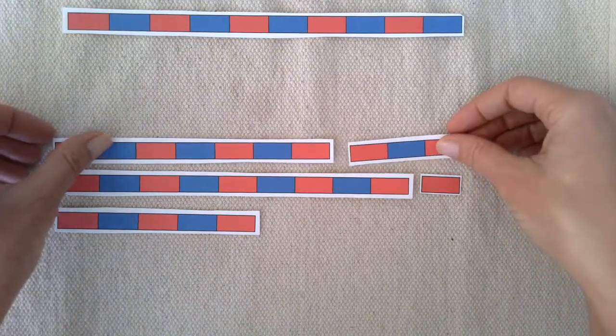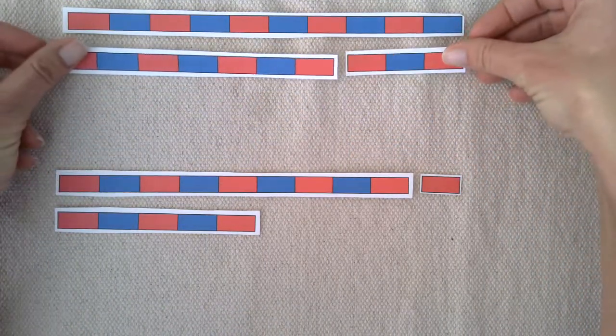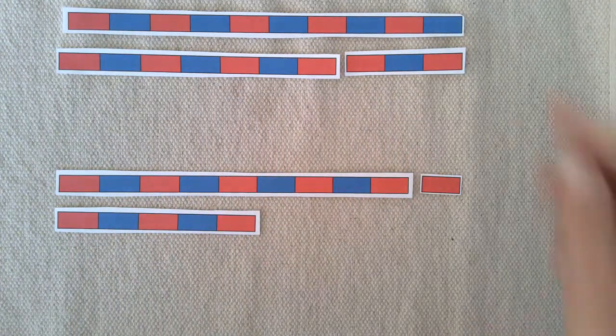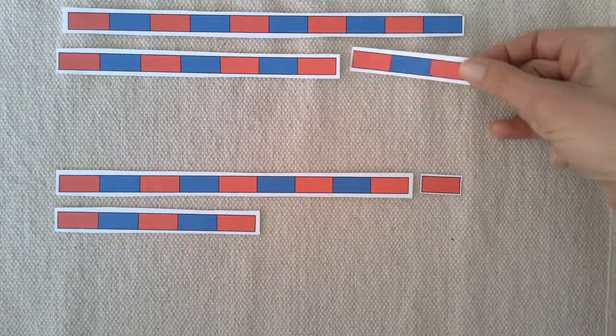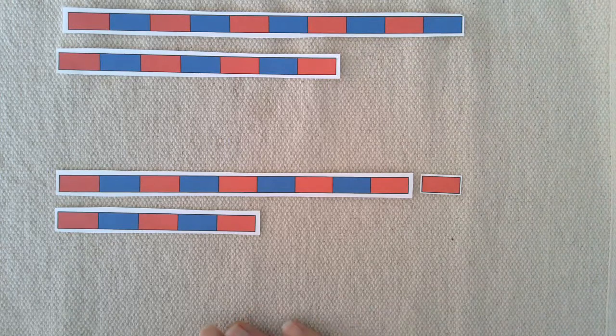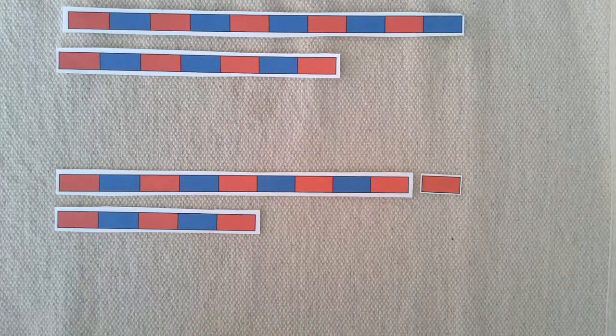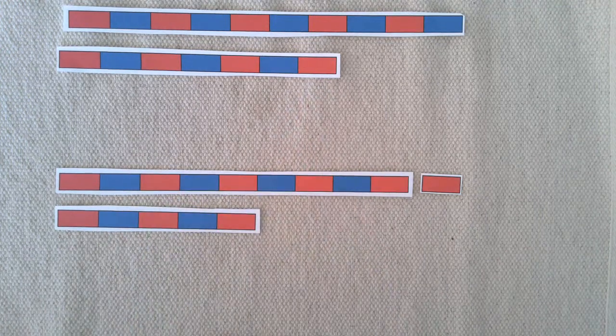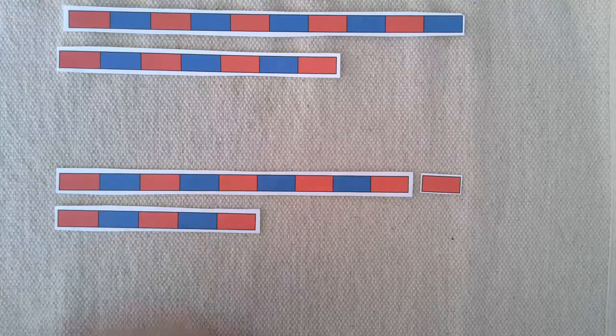Let's do several more. Here I have 10 again. If I take three away, how much do I have left? Yes, I have seven left. 10 minus 3 equals 7.